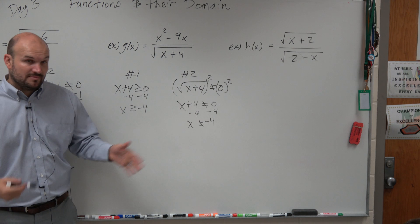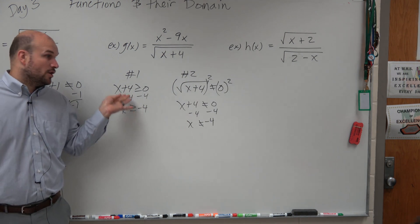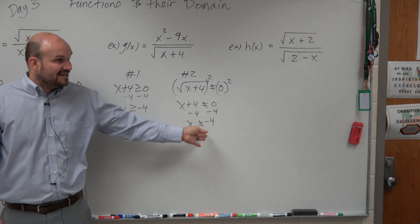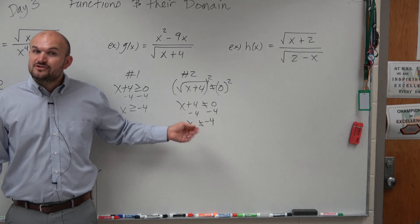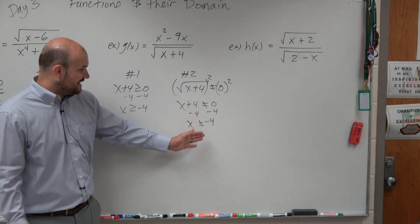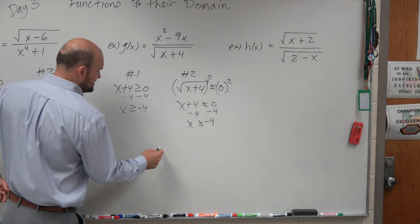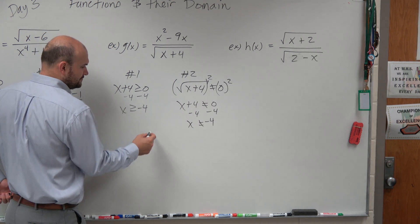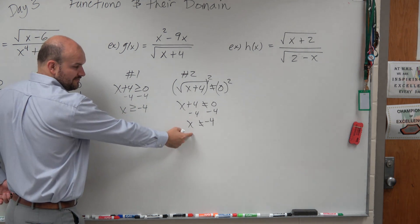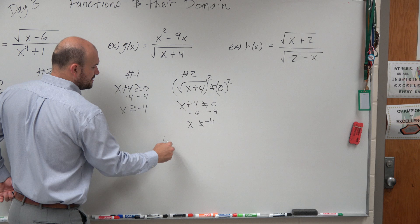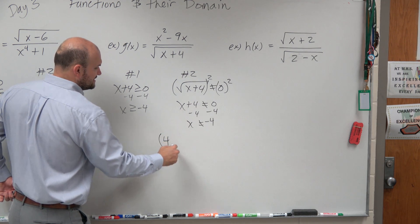So that's really important because here it says x has to be greater than or equal to negative 4. But here it says x cannot equal negative 4. So therefore, since it cannot equal negative 4, basically what we would write is negative 4 is actually not contained. It's contained for here, but it's not contained for there. So therefore, our final answer is going to be not contained.